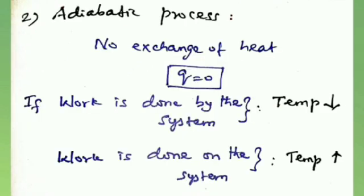Second one is adiabatic process. There is no change of heat Q between the system and surrounding during the process. In adiabatic process, if work is done by the system, the temperature decreases. Or if work is done on the system, its temperature increases, because the system cannot exchange heat with its surroundings.